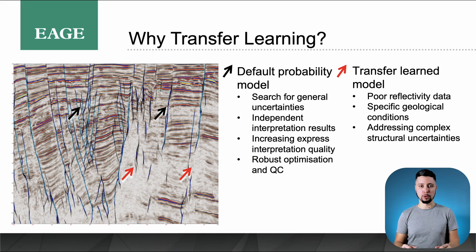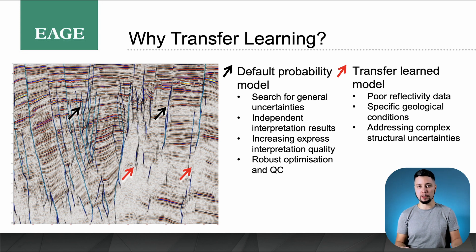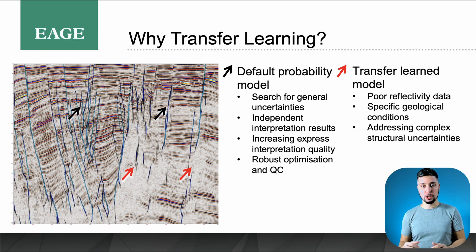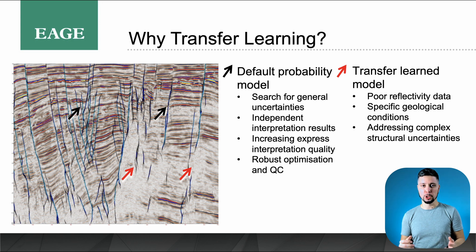The neural network trained on the synthetically generated dataset and verified on real data works in about 70% of general cases we see in the world. That 70% covers cases with similar faulting structures and noise levels to what was modeled synthetically. When dealing with geologically challenging seismic cubes — for example, cases where geology was not included in forward modeling, or where migration noise or other impurities exist in the real seismic data — the pursuit of perfection in fault detection inevitably leads us to transfer learning.